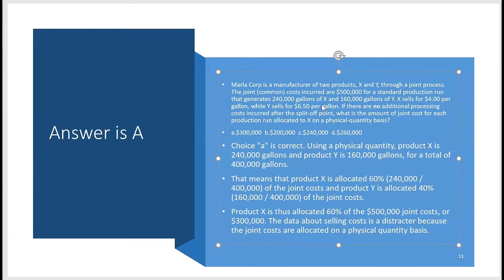Physical quantity basis is another term for volume method. Total volume is 400,000 gallons (240,000 + 160,000). For product X: 240,000 ÷ 400,000 = 60%, and 60% of $500,000 = $300,000, which is choice A. For product Y (anticipating the next question): 160,000 ÷ 400,000 = 40%, and 40% of $500,000 = $200,000, choice B. But they didn't ask about Y.